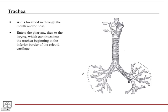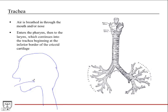We'll start at the beginning. Air is breathed in through the mouth and nose. If we draw a side view of someone, we have the oral cavity, and then it can come in through the nose as well — the nasal cavity. The oral and nasal cavities terminate into an area called the pharynx.